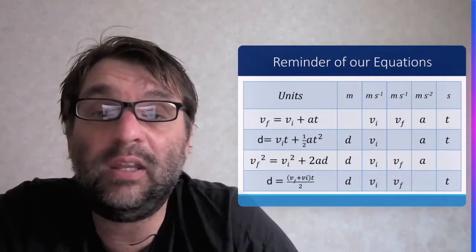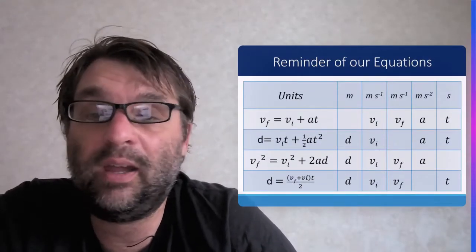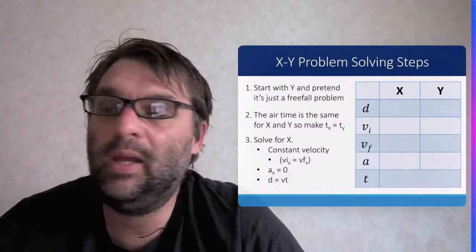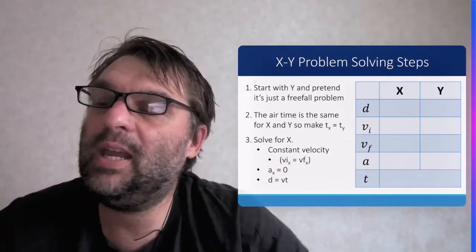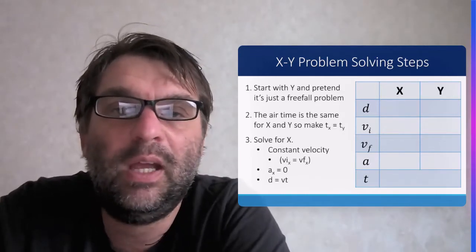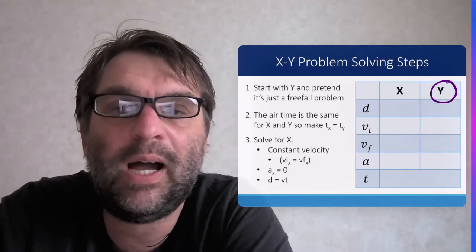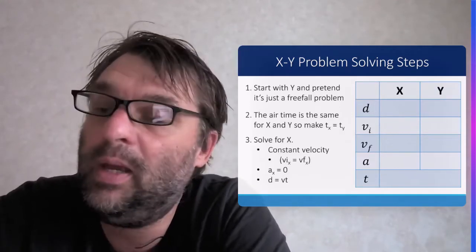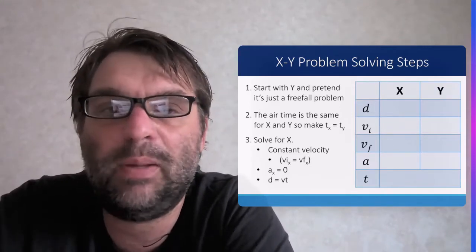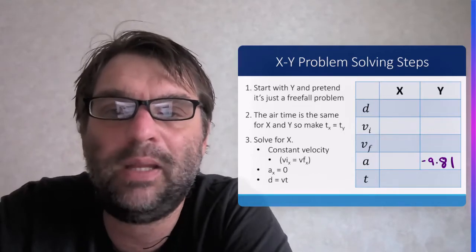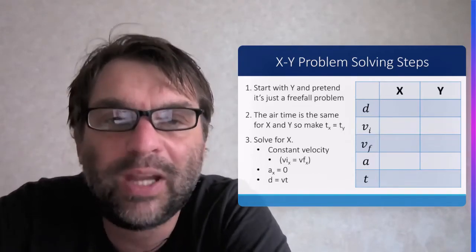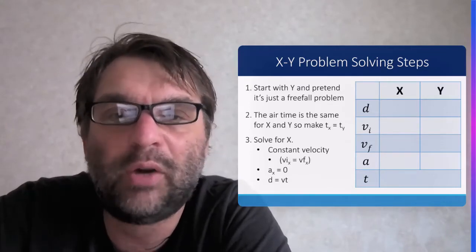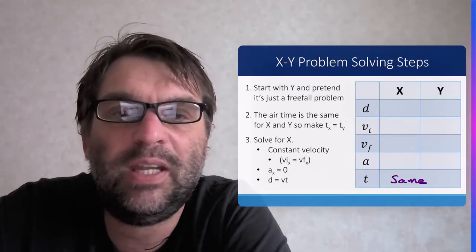To do that you need to utilize the four kinematic equations, so you need to be familiar with them. From our previous lesson, the XY problem-solving steps: you start with the Y direction and assume it's a freefall problem, so the acceleration is going to be minus 9.81 meters per second squared in the Y direction, and the airtime for both X and Y directions are the same, so TX equals TY.